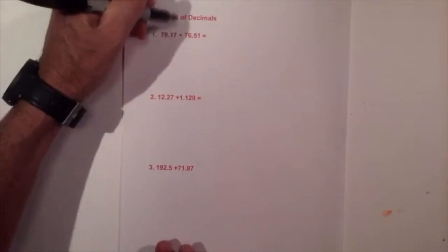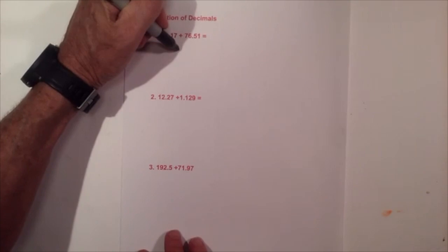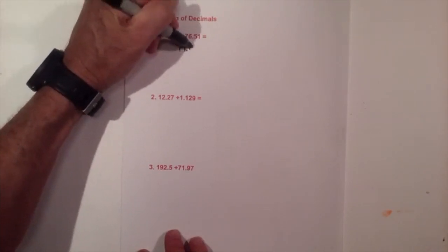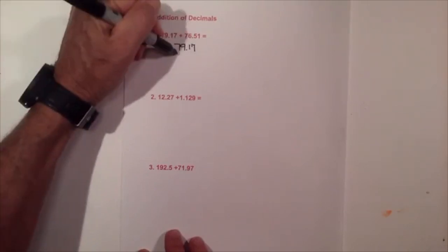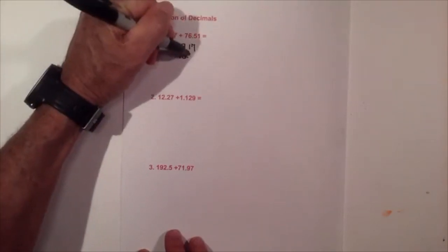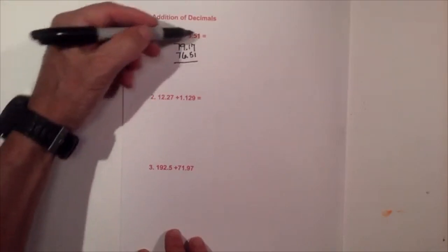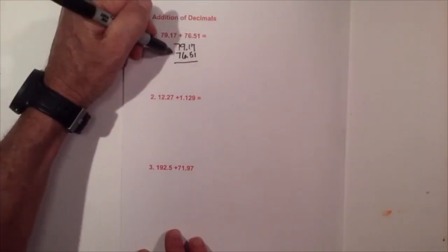We have 79.17 plus 76.51. The key to decimals is lining up the decimal point in a straight line. With this I am going to rewrite. Notice that the decimals are lined up and then we just add like you do normally.